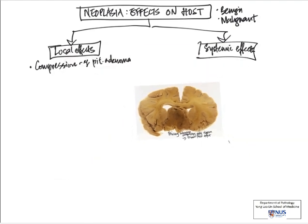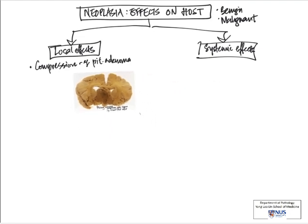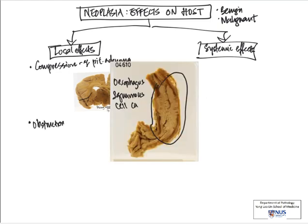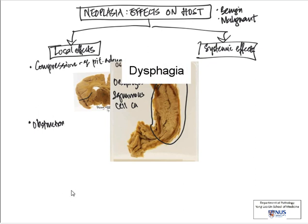The next local effect would be something that occurs in tubular structures, for example in the gut — obstruction. Here we have a picture of the esophagus, which is quite a narrow tube already. There is a squamous cell carcinoma growing into the lumen and compressing it to a small slit-like space. So this patient is likely to present with difficulty swallowing, or dysphagia. This is one of the obstructive effects of the tumor.